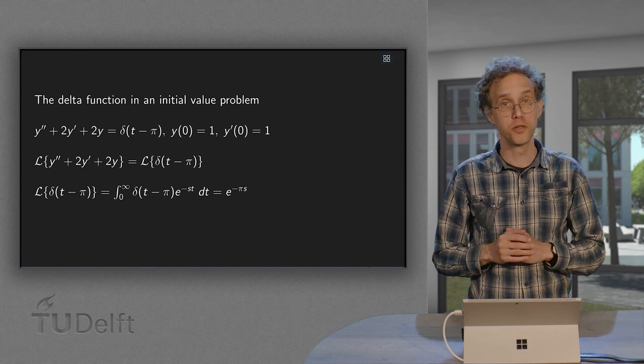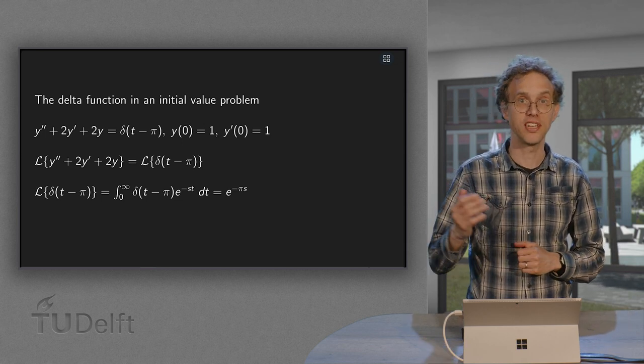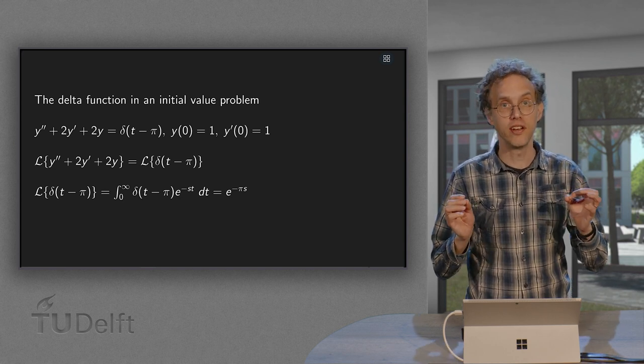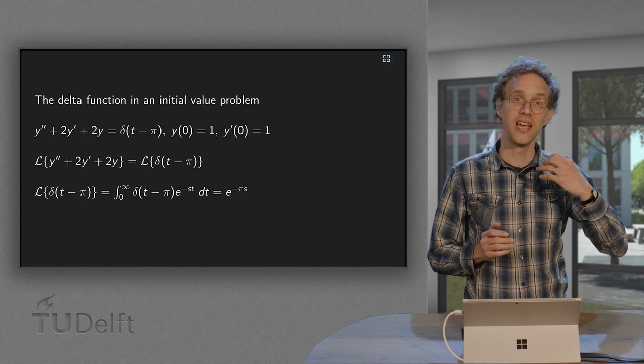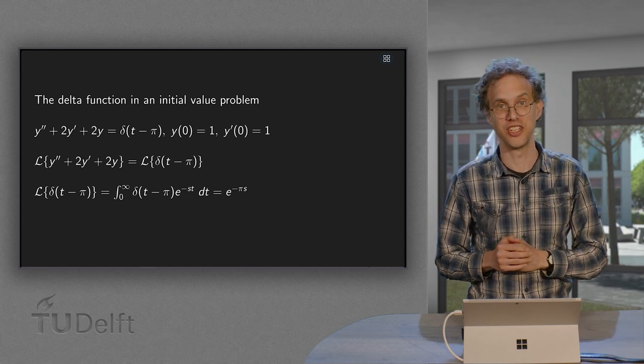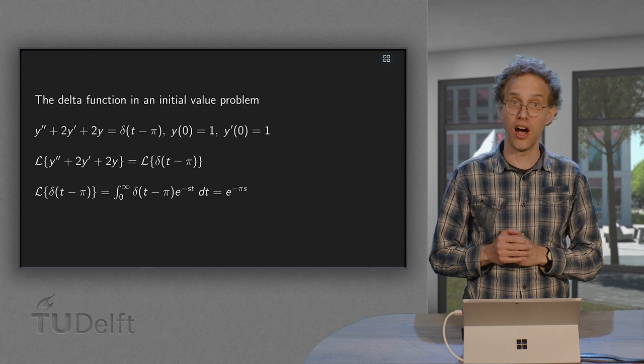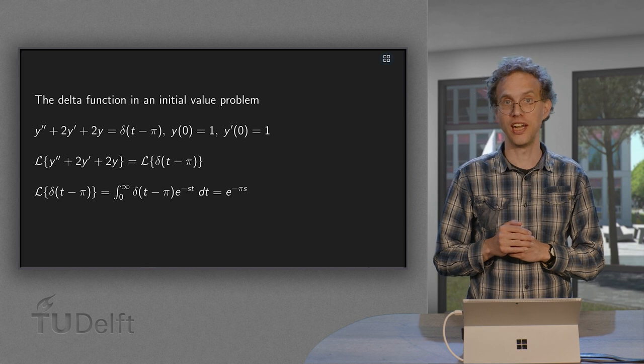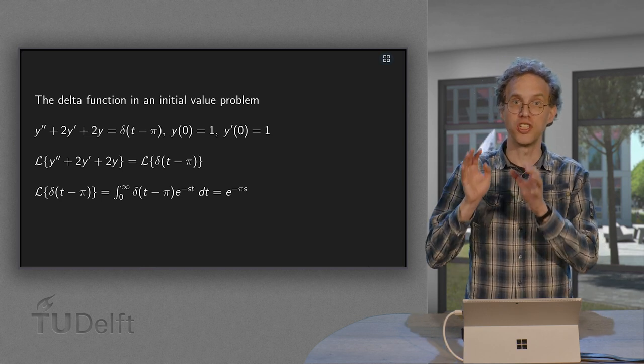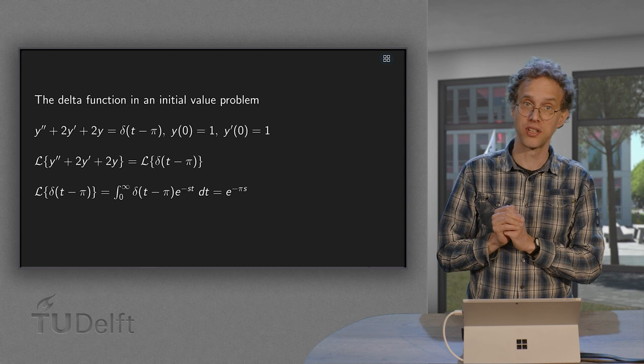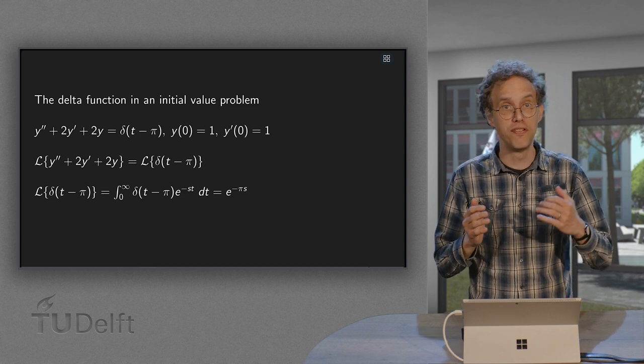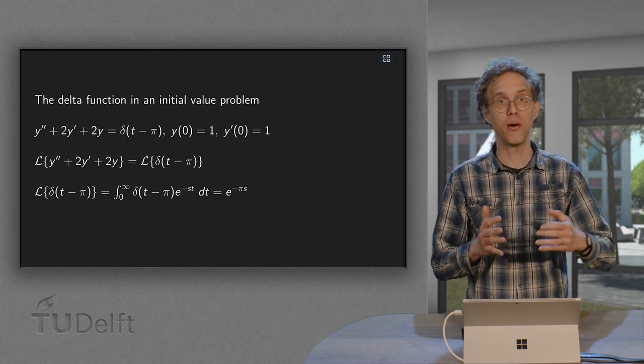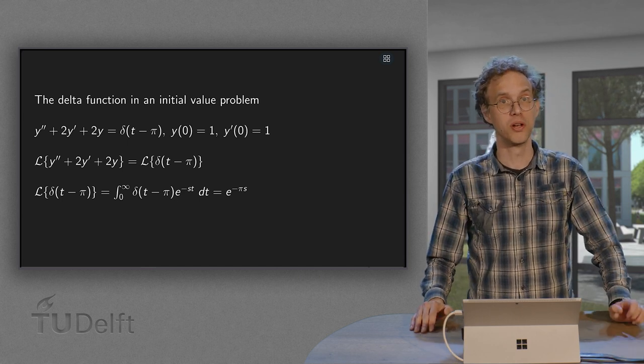A mass spring system can be modeled as a second-order initial value problem with constant coefficients. We have seen this before. If we now add a delta function on the right-hand side, we can regard this delta function as a force of a very short duration. This force delivers a unit impulse on the mass. From a physical point of view, you might have an idea of what happens to a mass and how our solution is going to look like. So, what do you think?